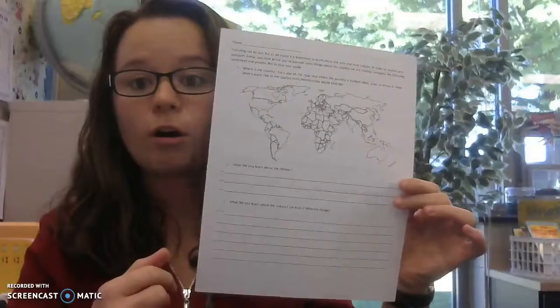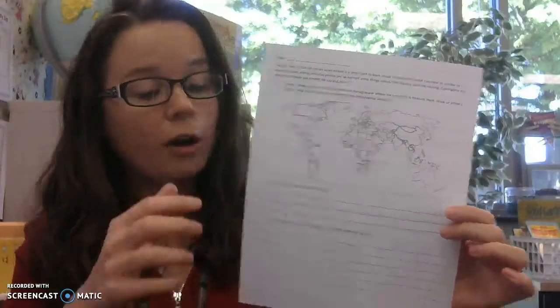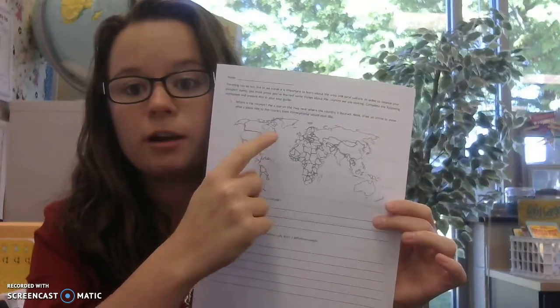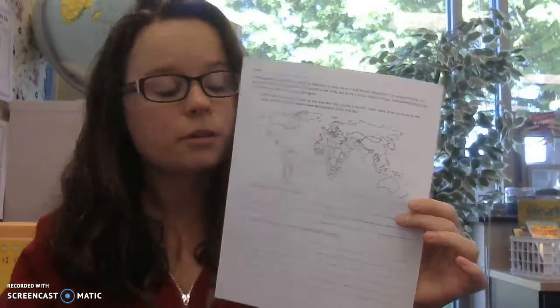So you should have a paper in your blue math folder that looks like this. The front should be complete. You should have already gone through number one where you marked where Senegal is in the world. And you should have drawn an arrow from Pennsylvania, which is right about there, to Senegal, which is somewhere over there.